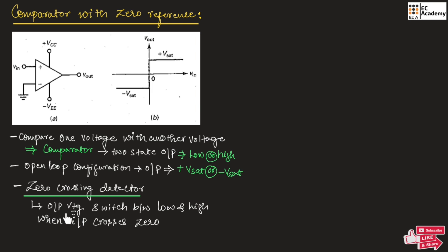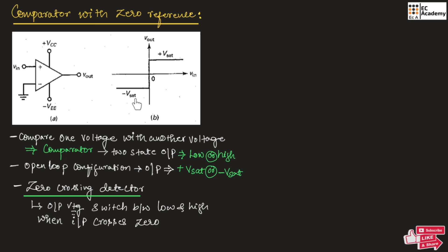In this type of comparator, the output switches between low and high whenever the input crosses the zero reference. Figure B shows the input-output response of the comparator. On the x-axis we have input voltage and on the y-axis we have output voltage. As you can observe from the waveform, when the input is negative, the output voltage will be minus V-saturation. And once the input voltage crosses the zero reference point, the output will switch to plus V-saturation.